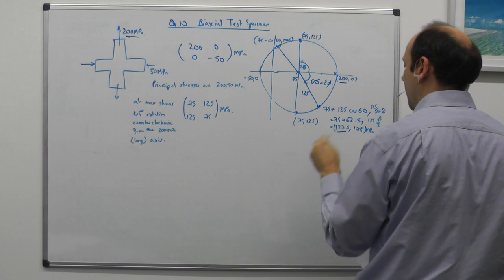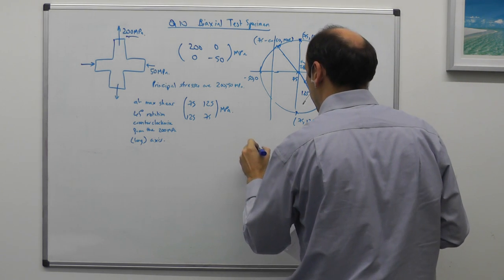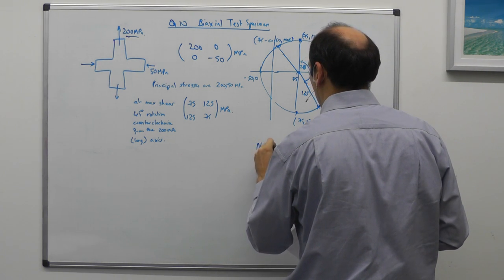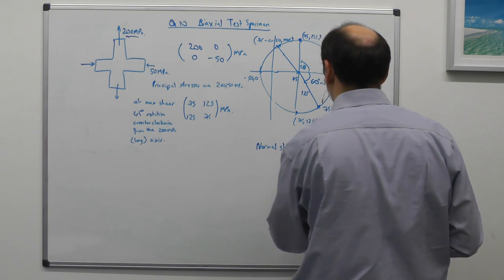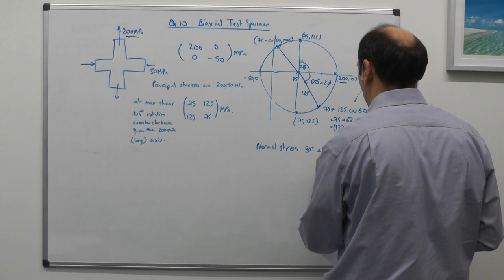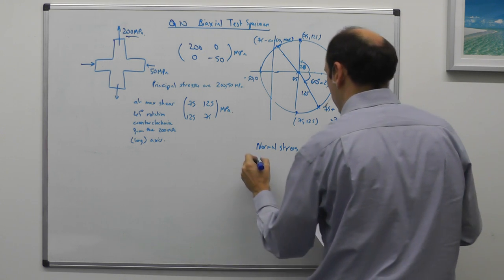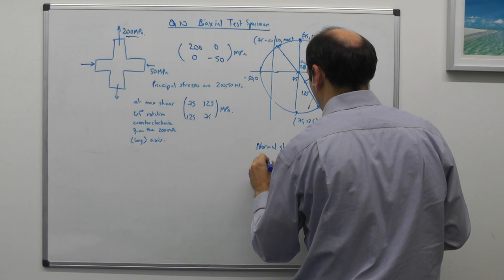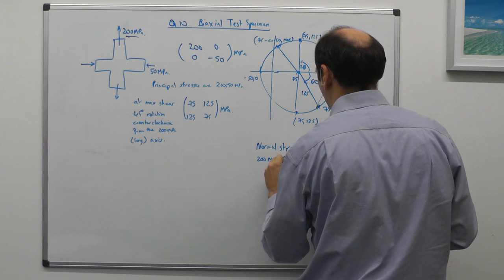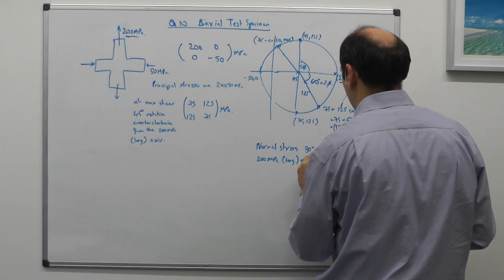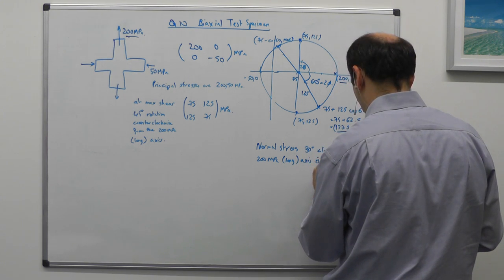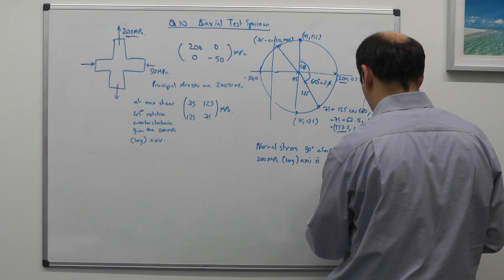So the normal stress is that number. So the normal stress, 30 degrees clockwise from the 200 MPa longitudinal axis is 137.5 MPa.